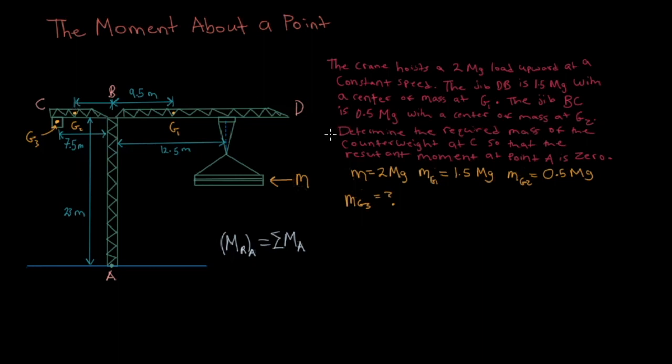What we need to find is we need to determine the required mass of the counterweight so that the resultant moment about point A is zero. So over here we have our given: m is 2 megagrams.